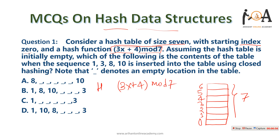Assuming the hash table is initially empty, which of the following is the content of the table when the sequence 1, 3, 8, and 10 is inserted using closed hashing? Note that underscore denotes an empty location in the table. Out of options A, B, C, and D, we need to find which is the correct sequence after inserting all elements.